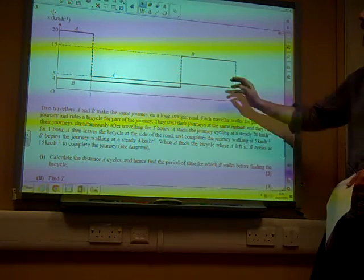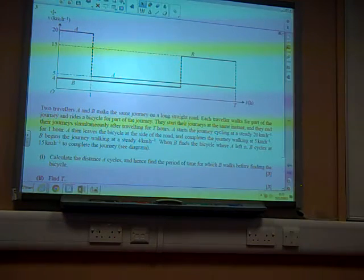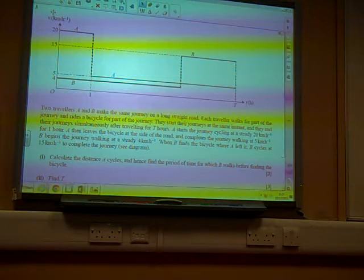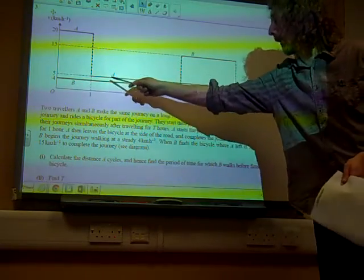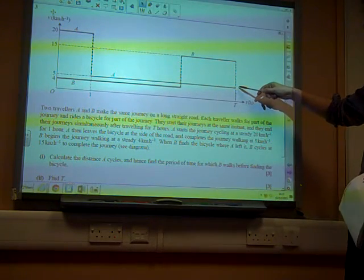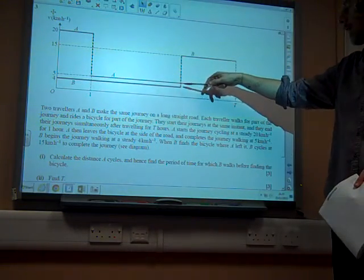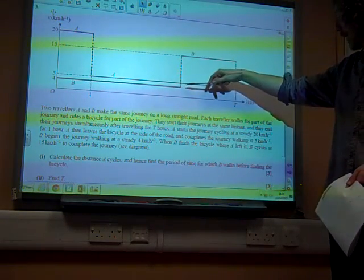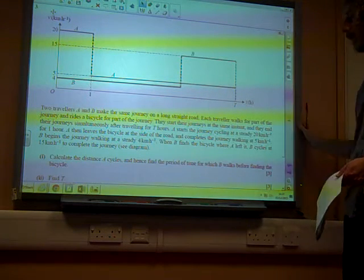A starts cycling at a steady speed of 20 for one hour, then leaves the bicycle at the side of the road and completes the journey walking at 5 kilometres an hour. B begins the journey walking at a slightly slower pace. When B finds the bicycle where A left it, B cycles at 15 kilometres per hour to complete the journey.